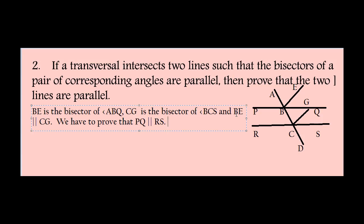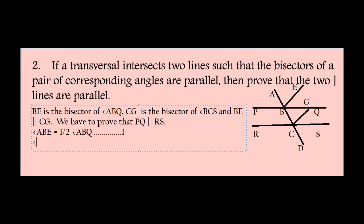Angle ABE equals half of angle ABQ — equation 1. Since CG is the bisector of angle BCG, angle BCG equals half of angle BCS — equation 2.